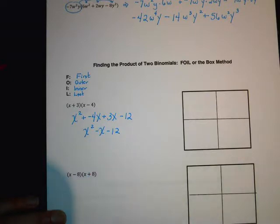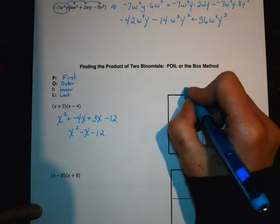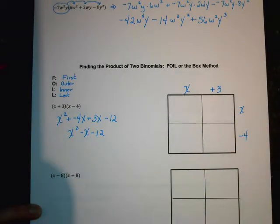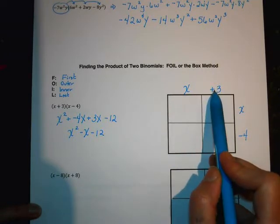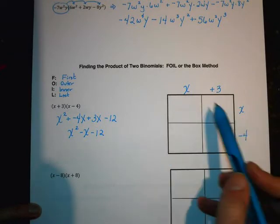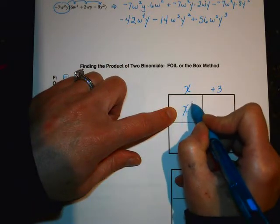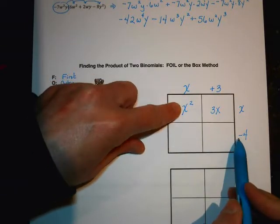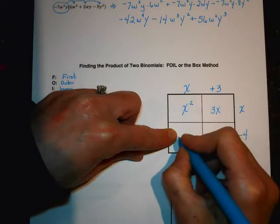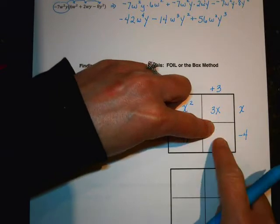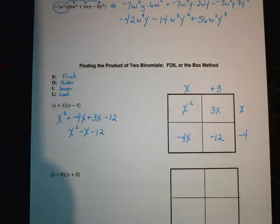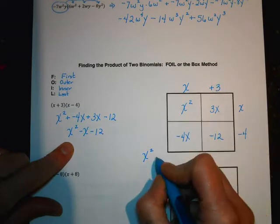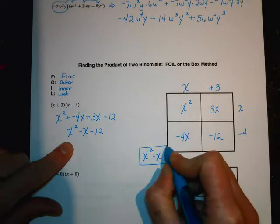I prefer the box method. Write the first binomial (x + 3) across the top and the second (x − 4) down the side, then multiply where rows and columns intersect: x times x = x², x times 3 = 3x, negative 4 times x = negative 4x, and negative 4 times 3 = negative 12. Adding the diagonals: x² then 3x minus 4x = negative x, then minus 12.